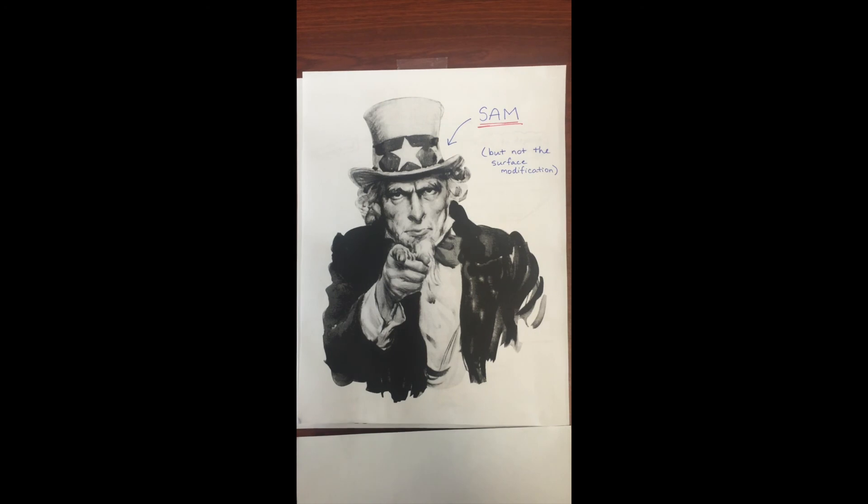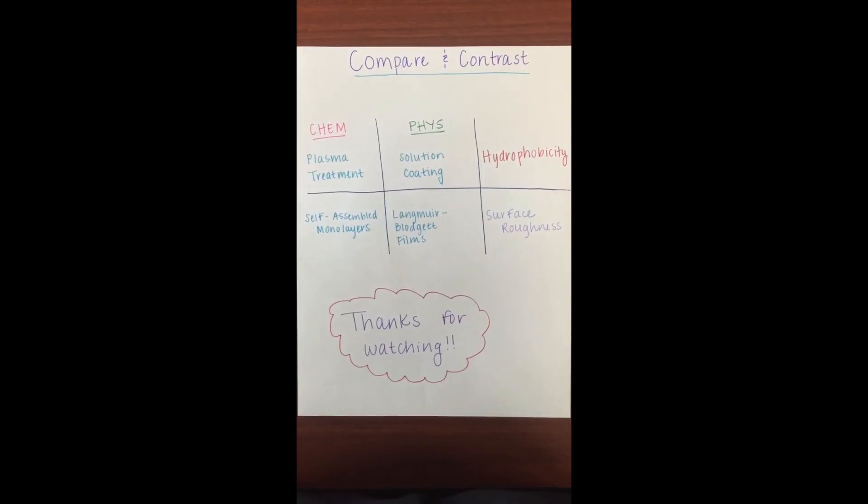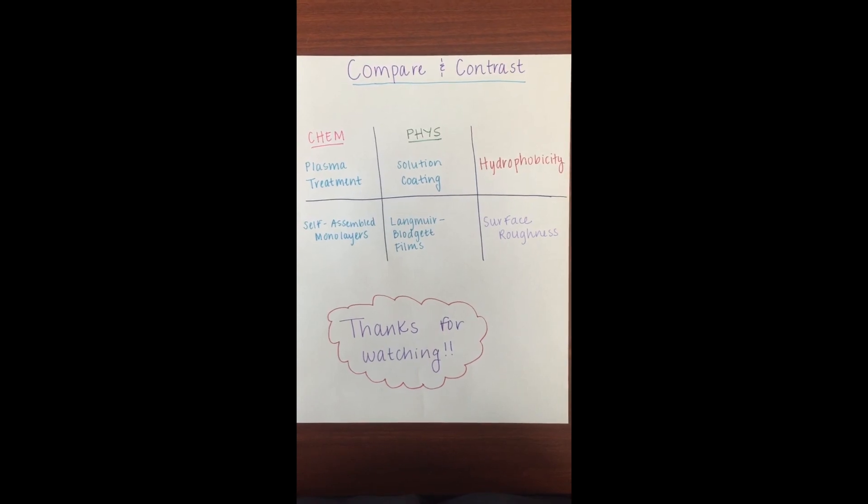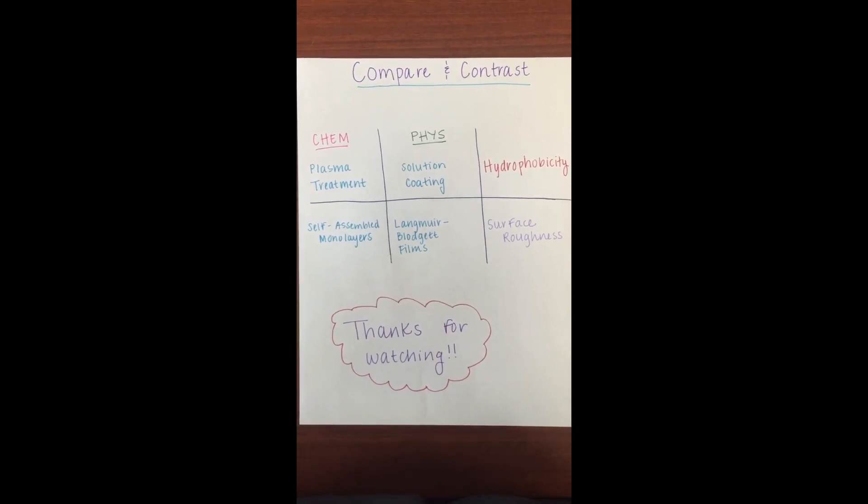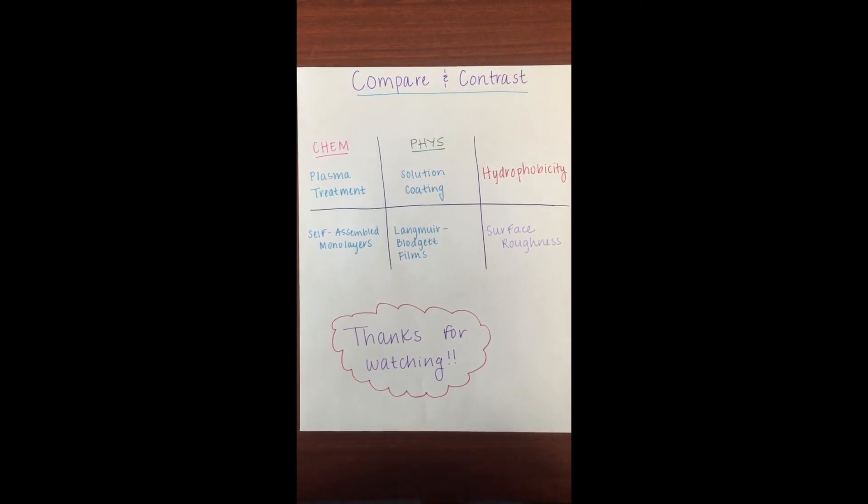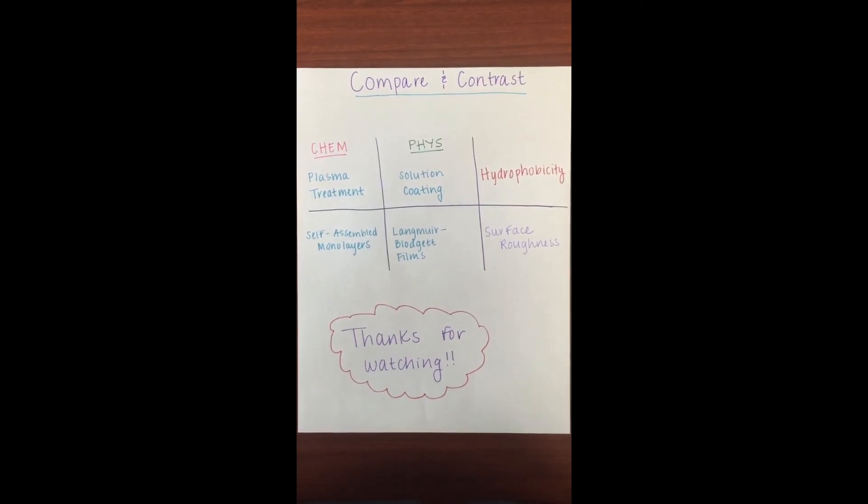Now on to our final review of our four surface modifications that we introduced to you today. Plasma treatment, self-assembled monolayers, solution coating, and Langmuir Blodgett films.